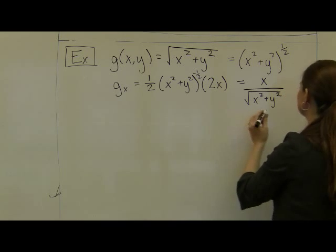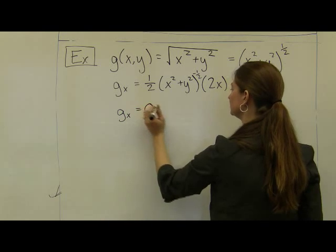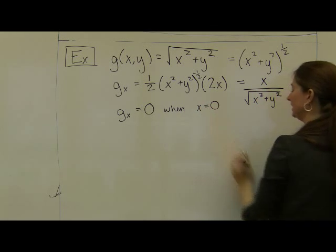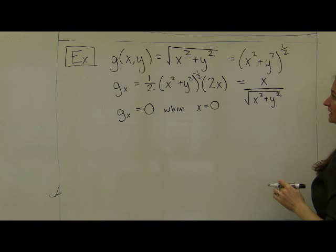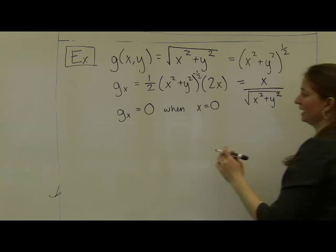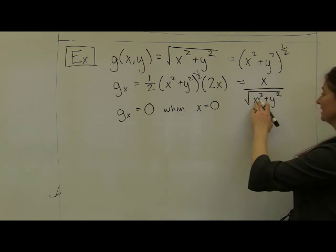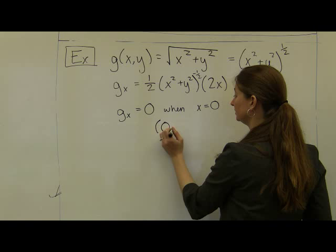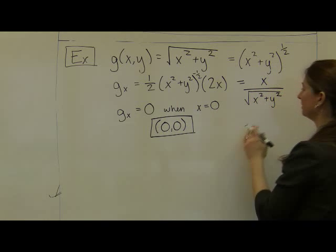The partial derivative with respect to x equals zero when the numerator equals zero, which is when x equals zero. But I also see right away that the point (0, 0) is undefined — I'd have zero over zero — so the partial derivative with respect to x is undefined when both x and y equal zero. By the second criterion, (0, 0) is a critical point, not because the partials equal zero, but because it's undefined there.